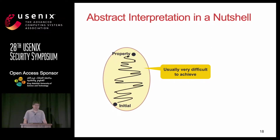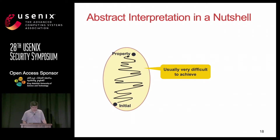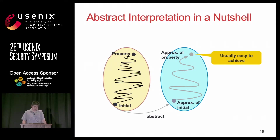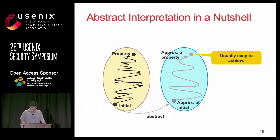Our static analysis relies on the abstract interpretation technique. If you do analysis over concrete program states, that's very complicated and it's very hard to verify certain security properties. What abstract interpretation does is lift concrete program states into a simplified abstract domain, perform analysis over this simplified domain, and finally verify the approximation of the original security property. This has been proved to be a scalable approach over production software.